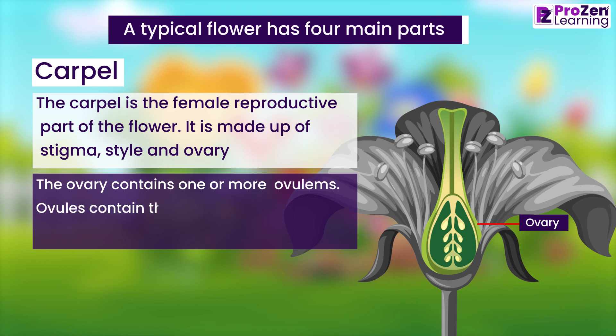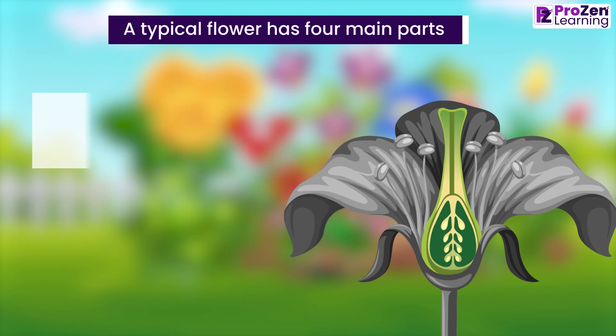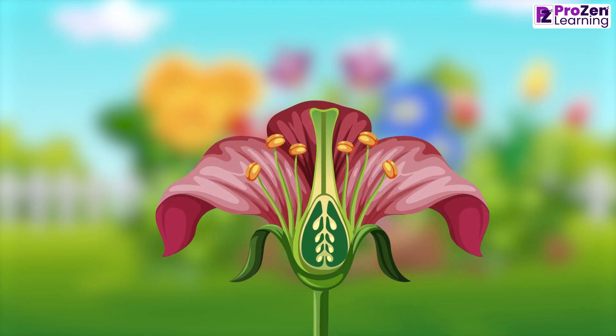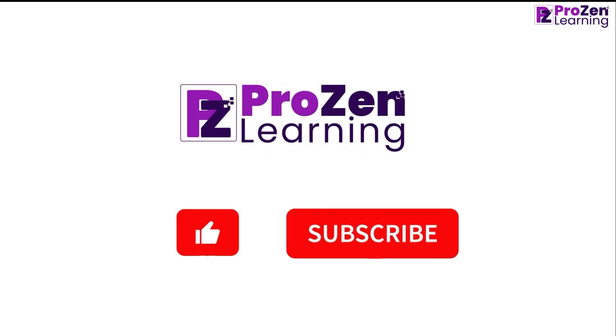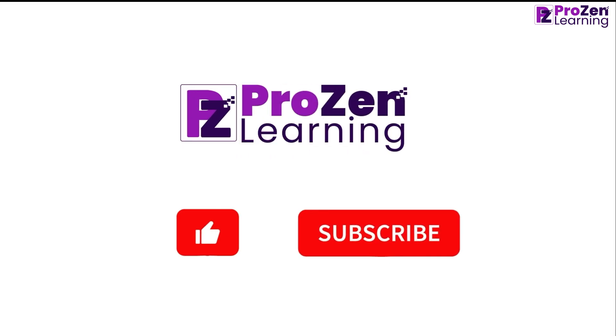Ovules contain the female cells, also known as egg cells. The receptacle is the swollen base of a flower which holds the different parts of the flower. See you soon with another topic — till then, bye bye.